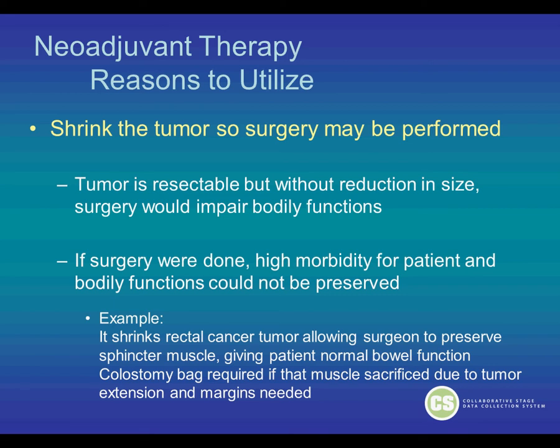For example, neoadjuvant therapy shrinks the rectal cancer tumor, allowing the surgeon to preserve the sphincter muscle, giving the patient normal bowel function. A colostomy bag would be required if that muscle was sacrificed due to tumor extension and the margins that would be needed.